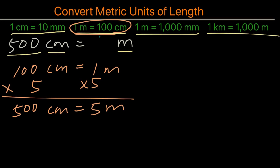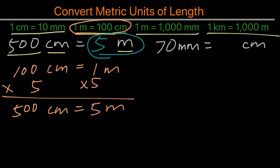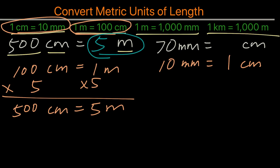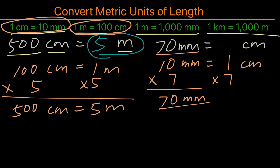So 500 centimeters equals five meters, and therefore you would input five as the answer. Now what about this one? 70 millimeters equals how many centimeters? The conversion we want to look at is 1 cm equals 10 mm. We multiply both sides by seven, giving us 70 millimeters, which equals seven centimeters.